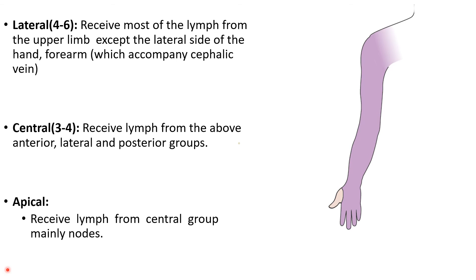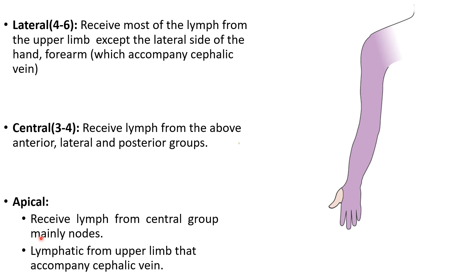The apical group receives lymph from the central group. Once the central group has received from the anterior, posterior, and lateral groups, efferents from the central group reach the apical group. Additionally, lymphatics from the upper limb accompanying the cephalic vein — from the thumb, lateral forearm, and arm — drain directly to the apical group, as do lymphatics from the upper quadrants of the mammary gland.